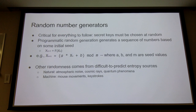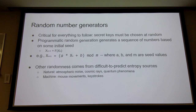Random number generators are how you get random numbers that an adversary cannot predict. That is critical because if an adversary knows what your numbers are, it's just game over. They know what your secrets were — they know how you mutated things exactly because they know what numbers you started with.